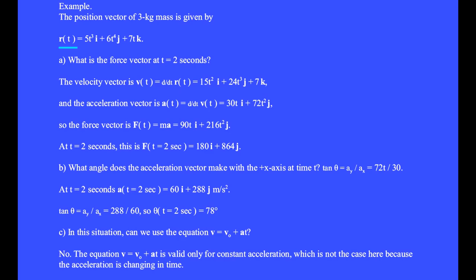We differentiate r to get v. To take the derivative of the position vector, we differentiate each one of its components with respect to time. The i-hat component of the position vector is 5t³. The time derivative of this is 15t².